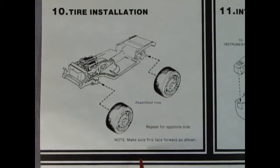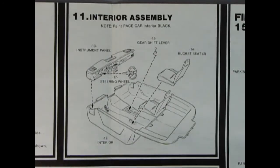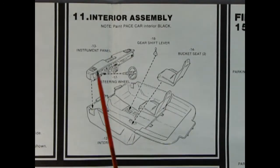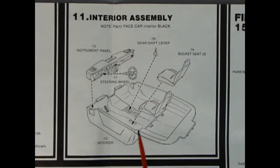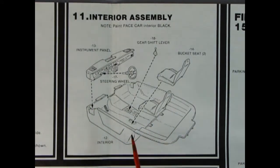Panel 10 shows our tire installation going on. Always remember the way the wheels are going - the little blades pointing forward. It says make sure fins face forward as shown. Panel 11 shows our interior assembly. It says to note: paint pace car interior black. We've got our instrument panel, our steering wheel, our interior bucket, the bucket seats, and the gear shifter. But one thing that is missing - if you look at the pictures of these, there's some kind of roll bar with lights on it that's supposed to be inside here, but it's not actually molded into the kit in any way, shape, or form.